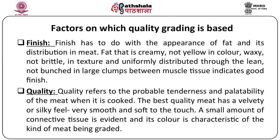The second grading factor is finish, which has to do with the appearance of fat and its distribution in meat. Fat in the meat contributes to juiciness and tenderness. The fat present on the surface of meat should be creamy, not yellow in colour, waxy but not brittle in texture, and uniformly distributed throughout the lean muscle mass — not bunched in large clumps between the muscle tissue. If all these characteristics are present, it indicates a good finish.